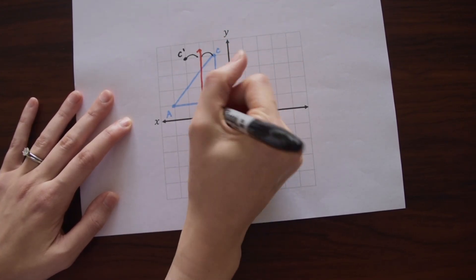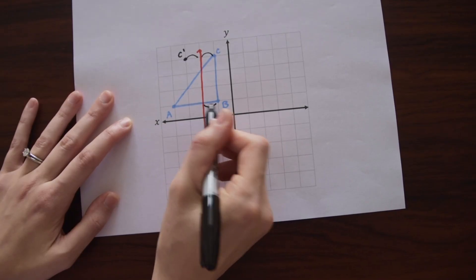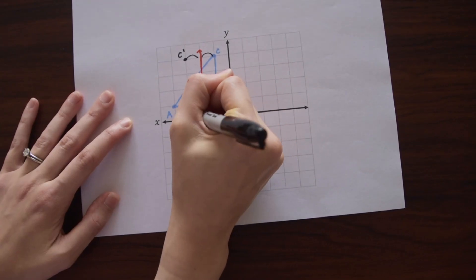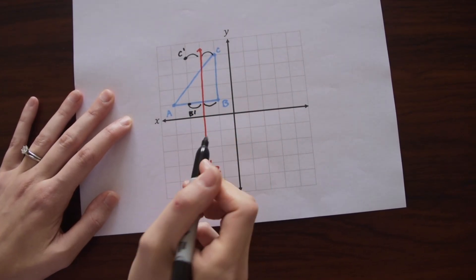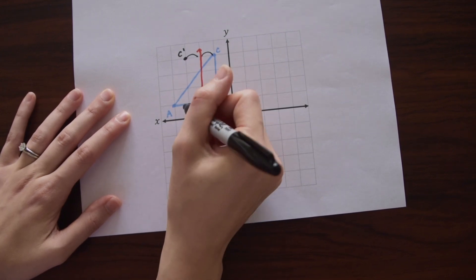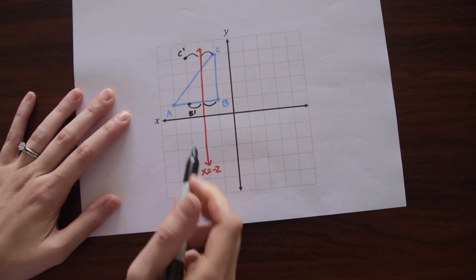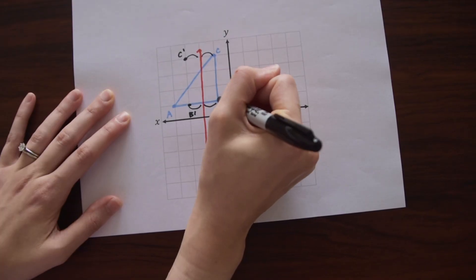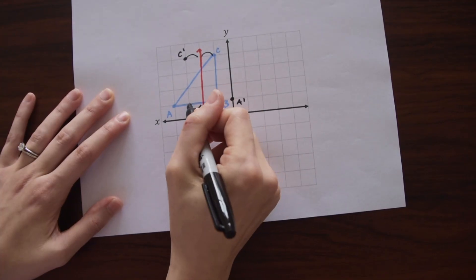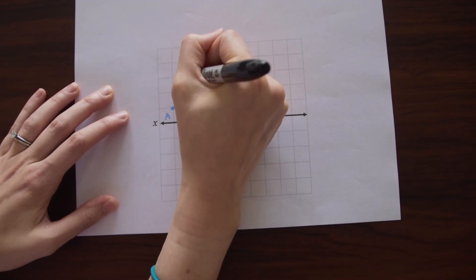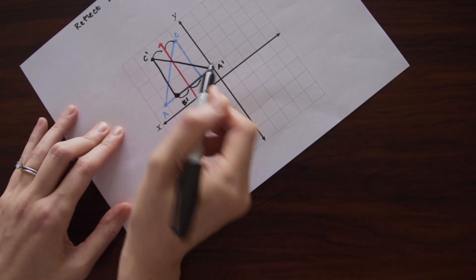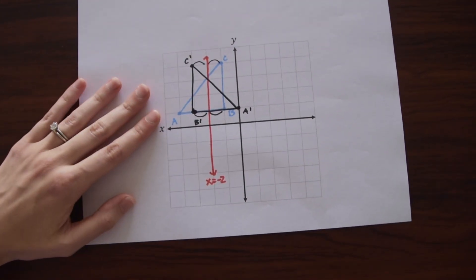And notice B is also one unit away from X equals negative two. So we're just going to go on the other side and put B prime one unit away. And lastly, we have this point A here. Notice it's two units from X equals negative two. So we're just going to go two units to the right on the other side here and put A prime. And now we just connect all our dots. And we have our new triangle A prime, B prime, C prime.